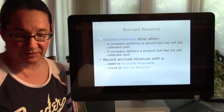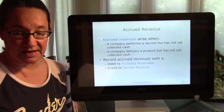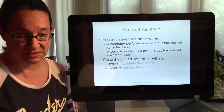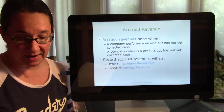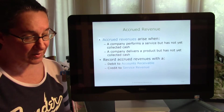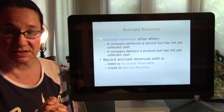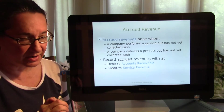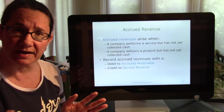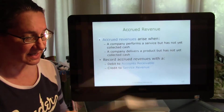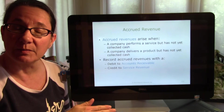Accrued revenue occurs when a company earns revenue — usually by performing services or delivering products — before receiving payment. If revenue has been earned, it is recorded even if payment hasn't been received. Accrued revenue entries generally require a debit to Accounts Receivable and a credit to a revenue account. For example, a contractor building a house over several months needs to recognize the revenue earned so far even without payment.